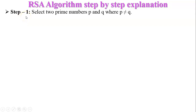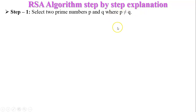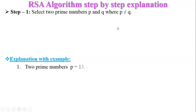Step number one of the RSA algorithm: select two prime numbers p and q, where p is not equal to q. As an example, I choose p equal to 13 and q equal to 11. Both are prime numbers and both are not equal.